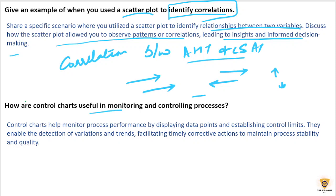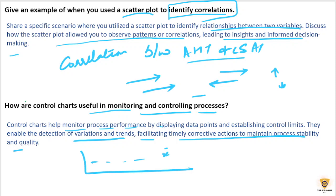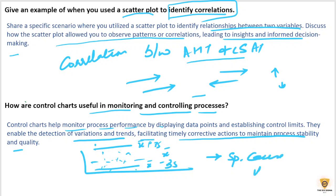How are control charts useful in monitoring and controlling processes? Control charts help monitor process performance by displaying data points and establishing control limits. They enable the detection of variations and trends, facilitating timely corrective actions to maintain process stability and quality. Any points within the control limits are acceptable, but points above or below over time represent special cause variations and should be addressed immediately.